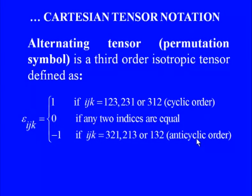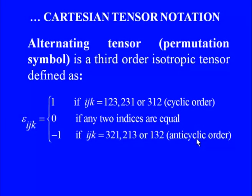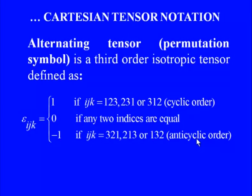The alternating tensor or permutation symbol ε_ijk is a third-order isotropic tensor. It equals +1 if ijk follows cyclic order (123, 231, or 312); equals 0 if any two indices are equal; and equals −1 if ijk follows anti-cyclic order (321, 213, or 132). This alternating tensor is primarily used in the cross product of vectors.